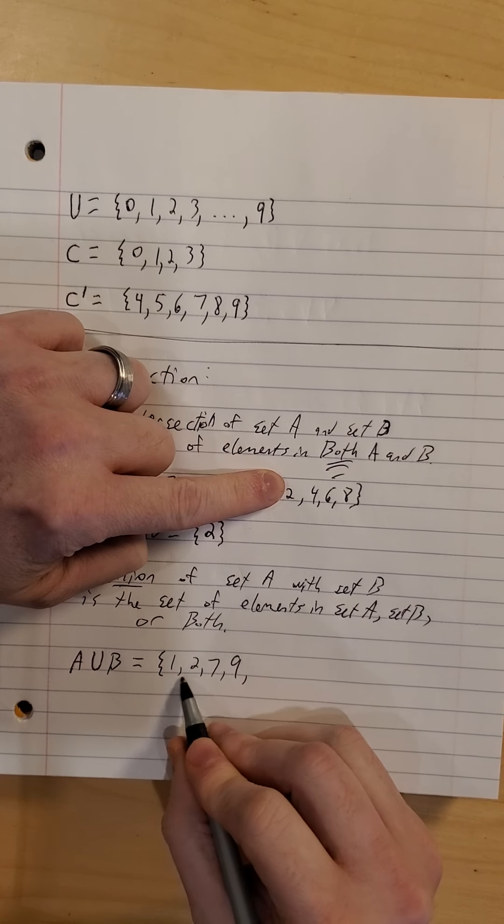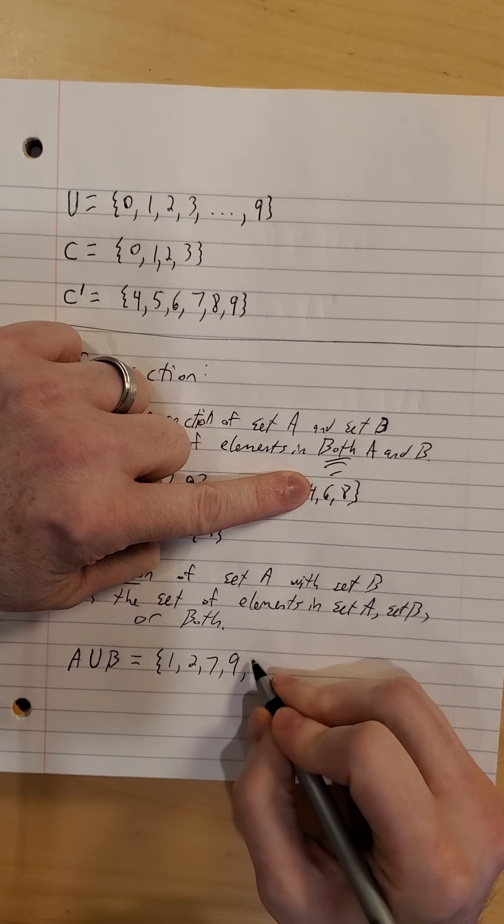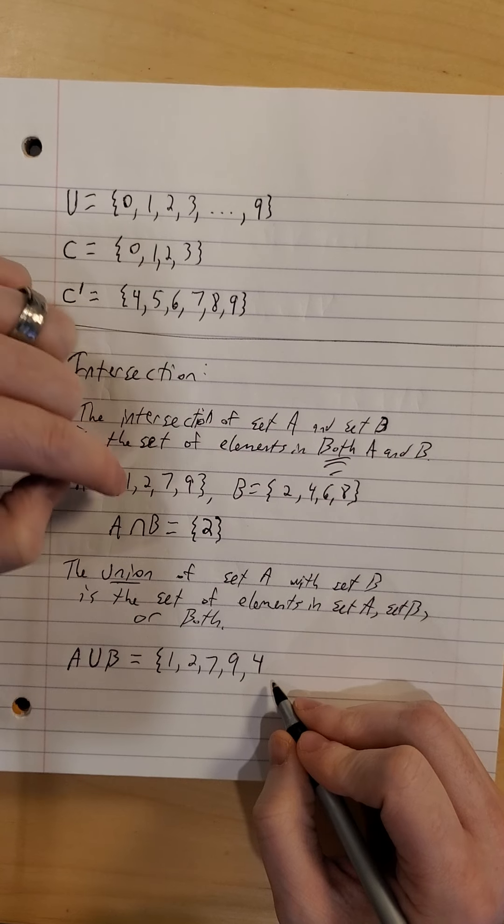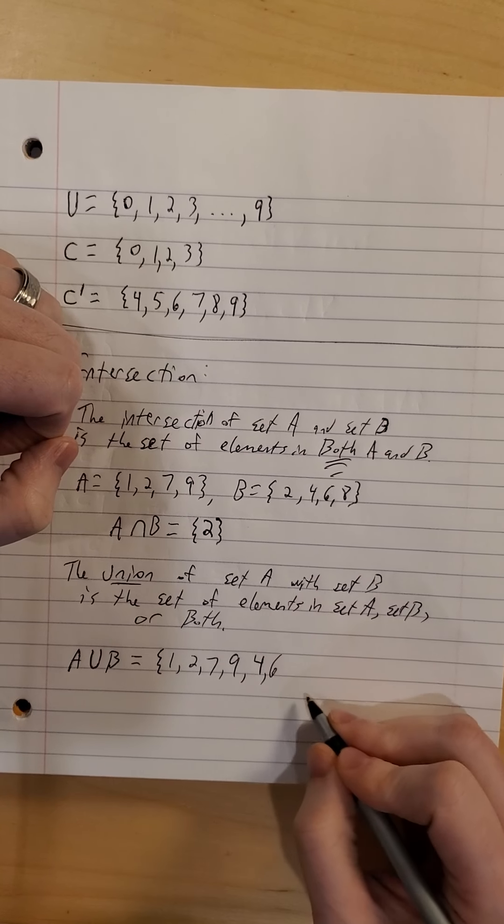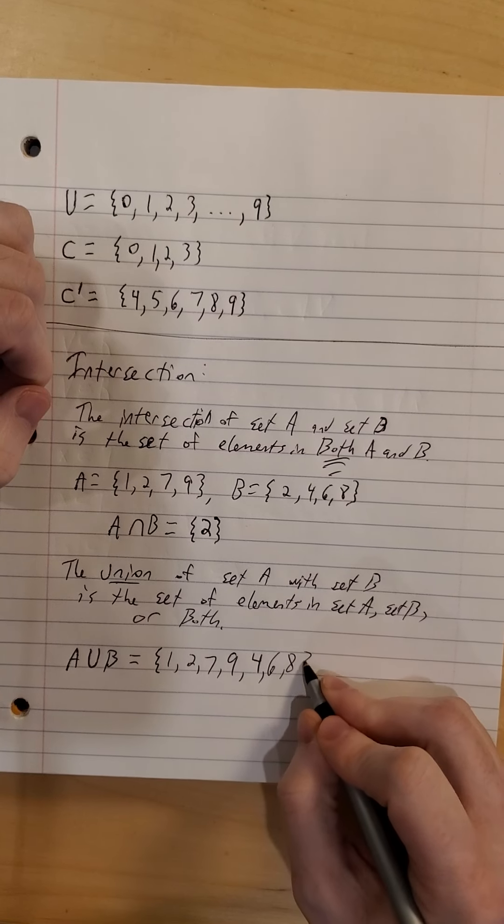2, I already have it listed. I don't write it down twice. 4, I haven't listed that yet. 4 goes in the union. 6, I haven't listed that yet, but it's in set B. It goes in the union. 8 is also in our union.